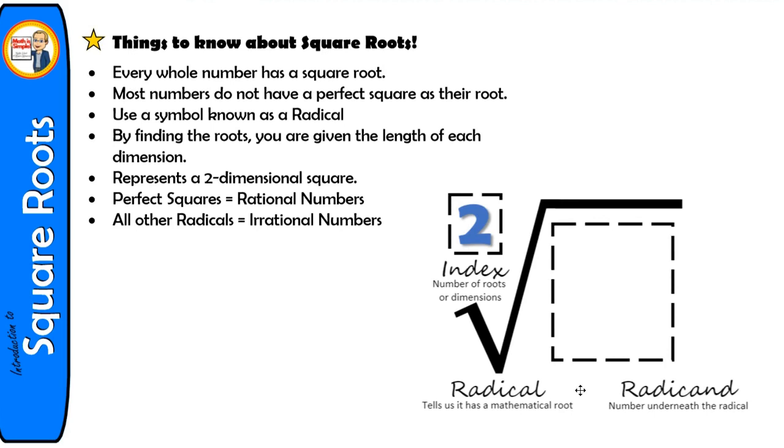The number underneath the radical, which is known as a radicand, tells us what the area is of the square. When we find our roots, we find the length of each dimension of the square. All four sides are the same, so when we find our root, we will know what the length and the width will be.